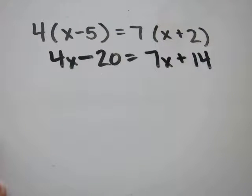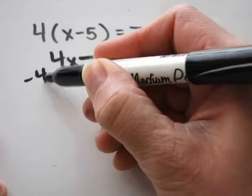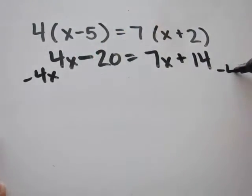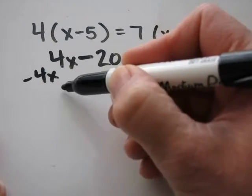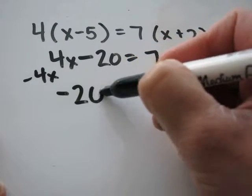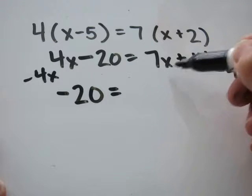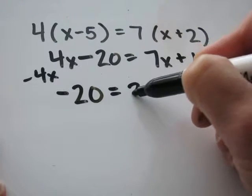Now I need the x's to be on the same side of the equation, so I'm going to subtract 4x from each side. 7x minus 4x is 3x.